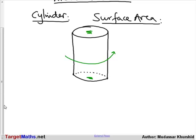So, how do we work out the area of each of these surfaces so that we can get the total surface area of a cylinder? Well, let's put some dimensions on this cylinder first.